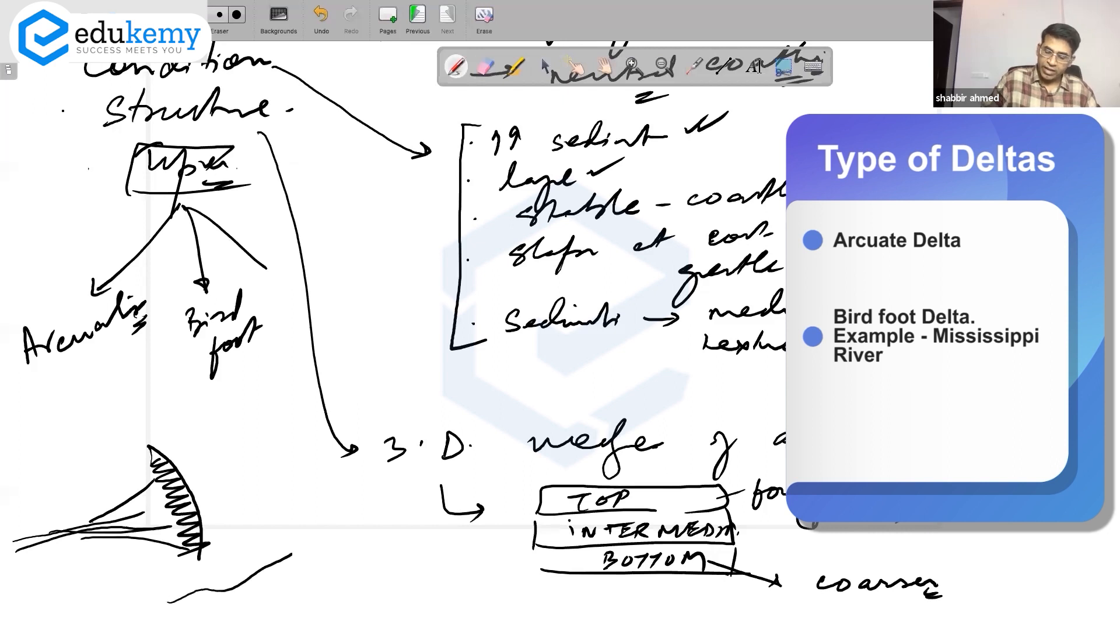Types also include bird foot delta, where the rivers deposit these kind of elongated ones. Bird foot is more common for very fine sediments. Example of bird foot delta is Mississippi.